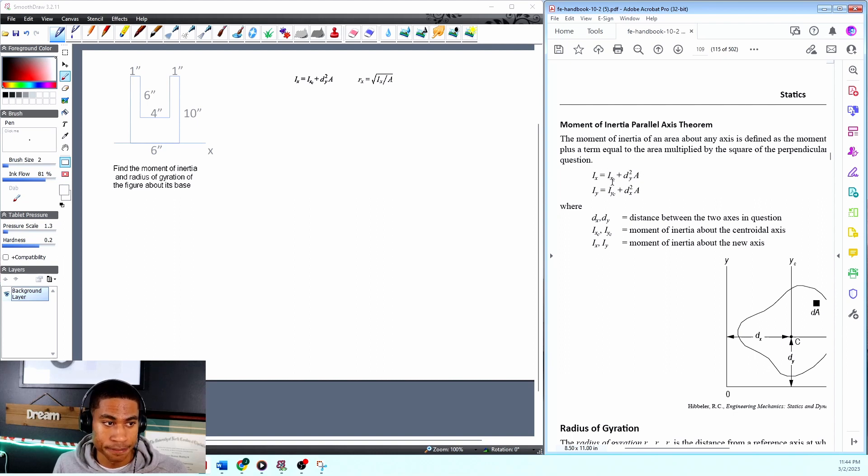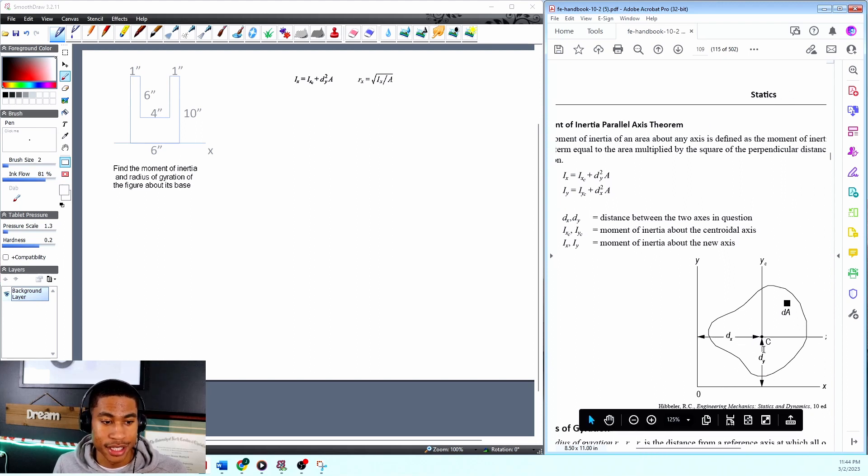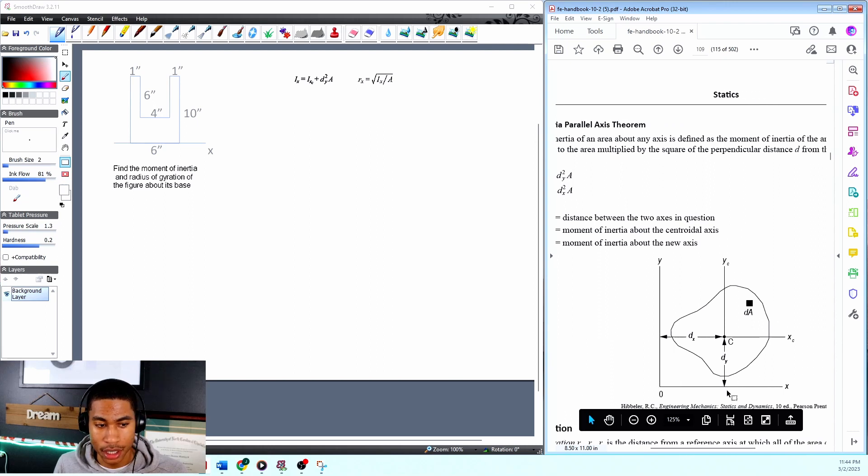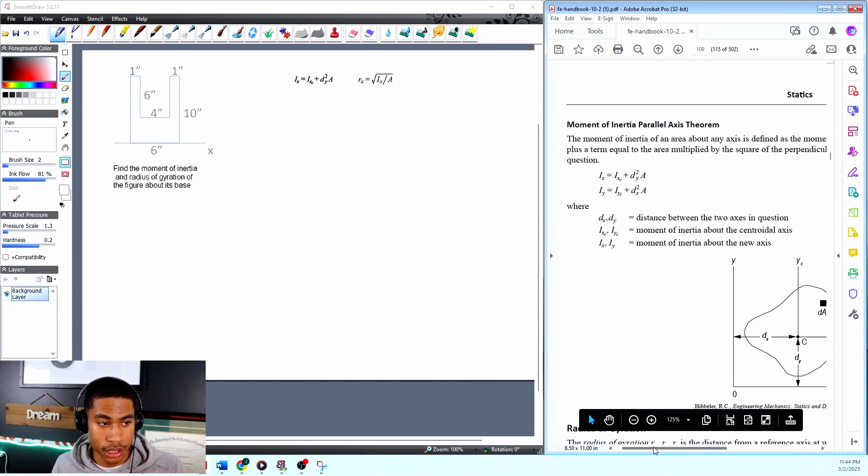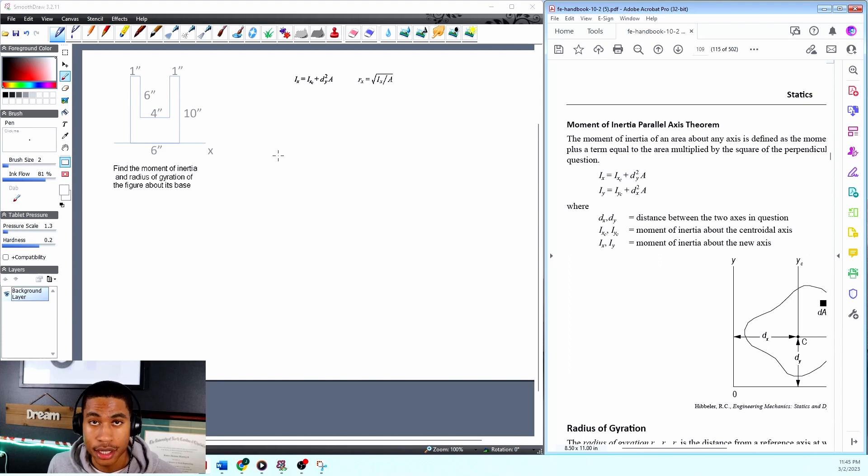The moment of inertia parallel axis theorem: if we're taking a moment of a shape that is not on the axis that we need, then we will need to use these formulas. We can take our shape and find the distance that it is from the axis, which is dy or dx depending on which moment of inertia you're trying to find.